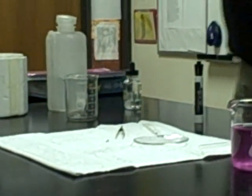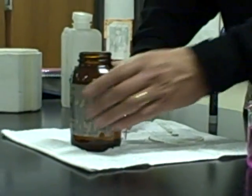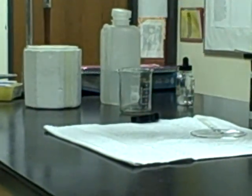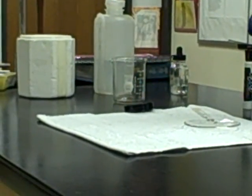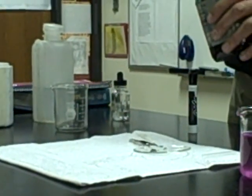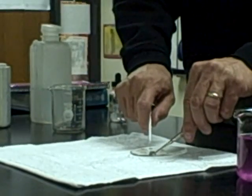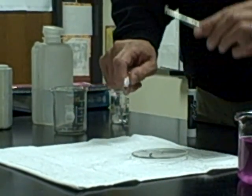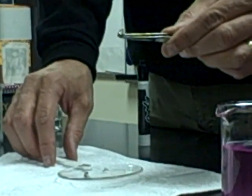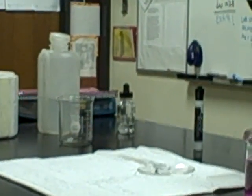The last alkali metal that we'll look at here in class, we'll actually look at two others on a little film clip, will be potassium. Let's see if I can get a piece out of this jar. This is the softest of the three. Slice into that. And the luster of the metal below, it's tough to see. It does oxidize pretty quickly, but you can see the shininess of the luster of the metal below for a moment.